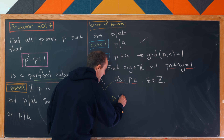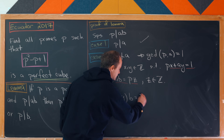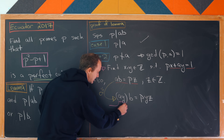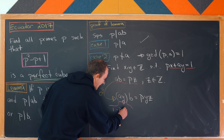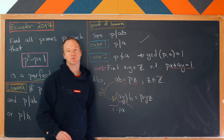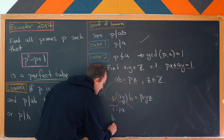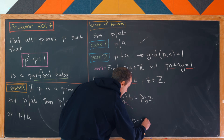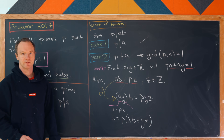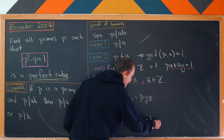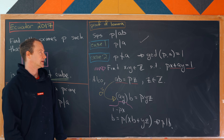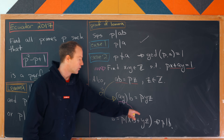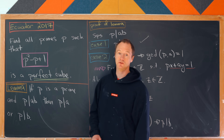Multiplying by y we have a·y·b equals p·y·z. Then we expand a·y out into 1 minus p·x using our expression from Bézout's lemma. That means b equals p·(xb + yz) after moving things around. Notice that means b is a multiple of p, which is the same as saying p divides b. So we started with p divides the product and showed that either p divides a or p divides b, which is exactly what we needed to prove the lemma.